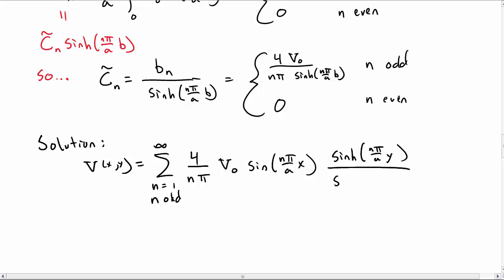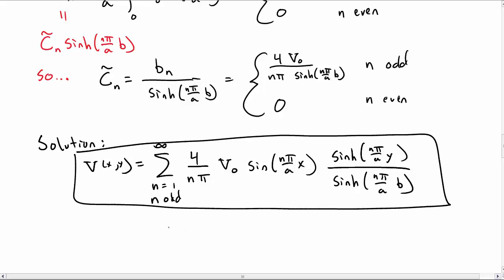Then we have sinh(n pi over a y) divided by sinh(n pi over a b). That one over sinh remember came from the C_n twiddle.